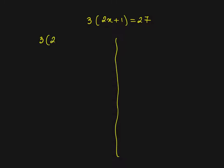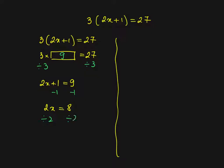First method, let me copy it again. See we have three times that bracket is 27. So that bracket must be 9. It's the same as I divide by 3 both sides. So 2x plus 1 must be 9. Subtract 1 on both sides. 2x equals 8. Divide by 2. x equals 4.